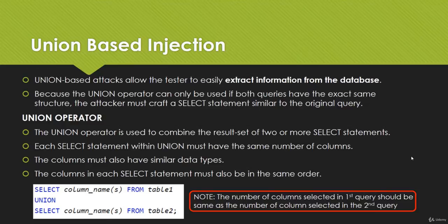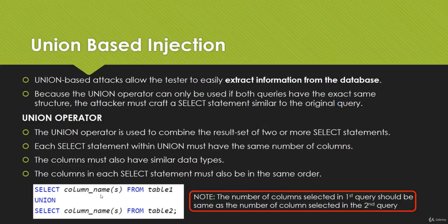Now let's learn what the UNION operator is. The UNION operator is used to combine the result set of two or more SELECT statements. Each SELECT statement within UNION must have the same number of columns, the columns must have similar data types, and the columns in each SELECT statement must also be in the same order. Here is a small example query: SELECT column_name FROM table1 UNION SELECT column_name FROM table2.